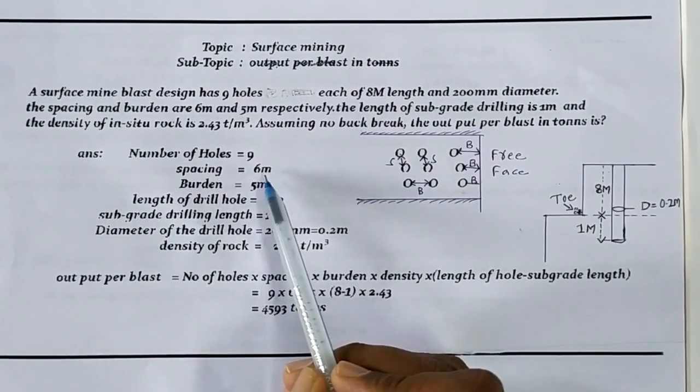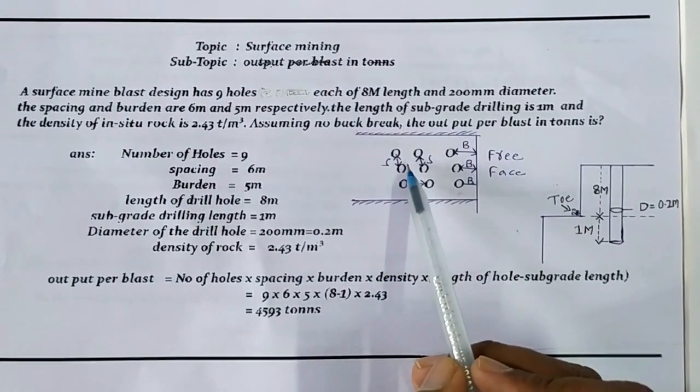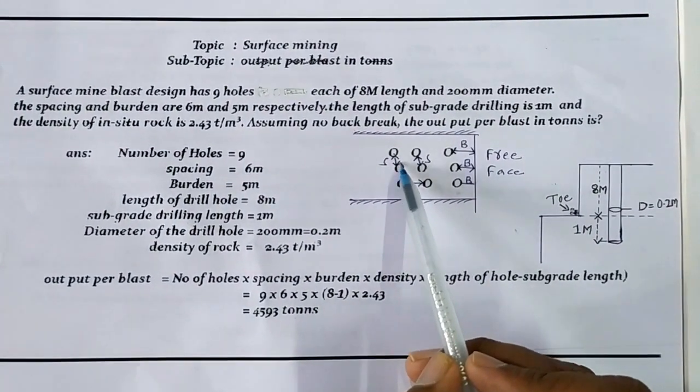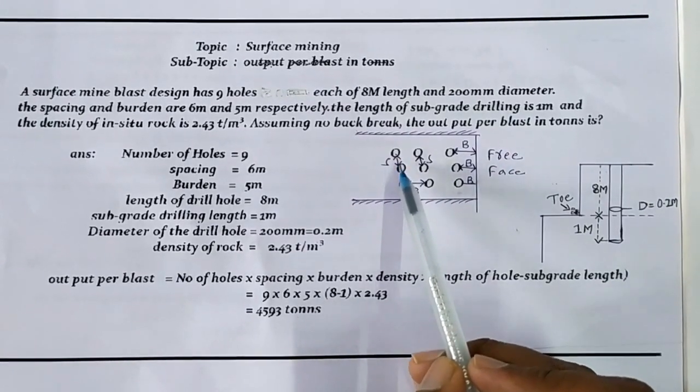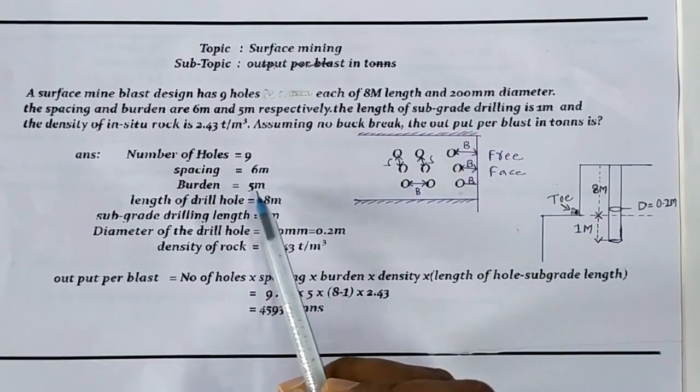Spacing is 6 meters. Spacing is the distance between two holes in the same row. Burden is 5 meters.